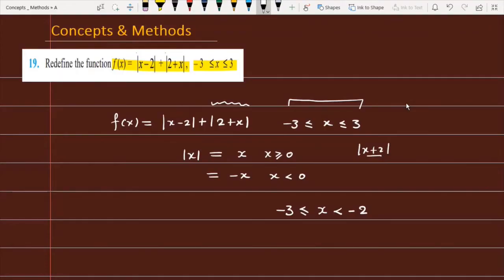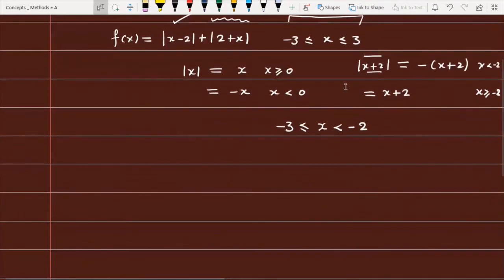When the modulus contains a negative quantity and you want to remove the mod, you need to introduce a minus sign. If the x value is less than minus 2, then this quantity is negative. If x value is minus 2 or greater than minus 2, then you will not change the sign.